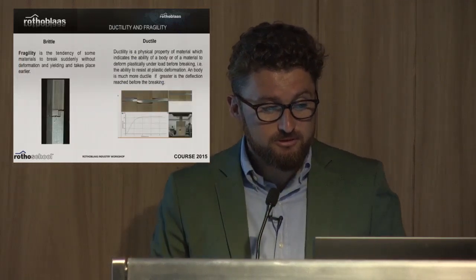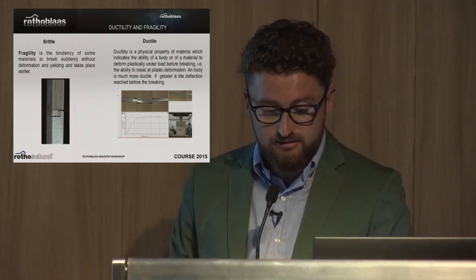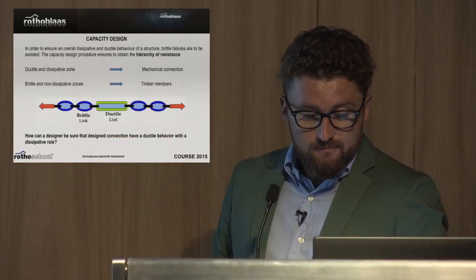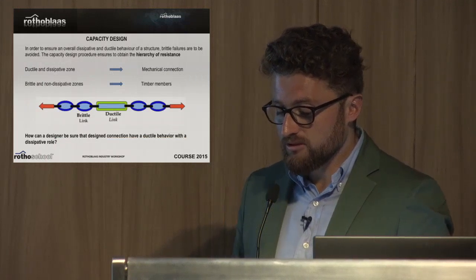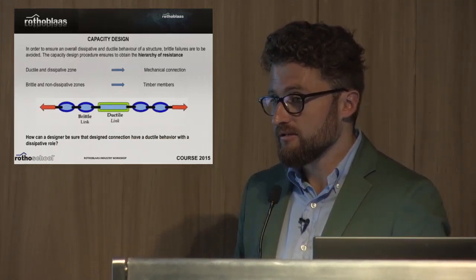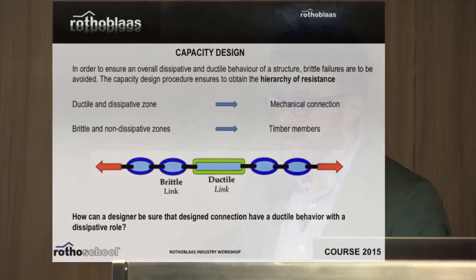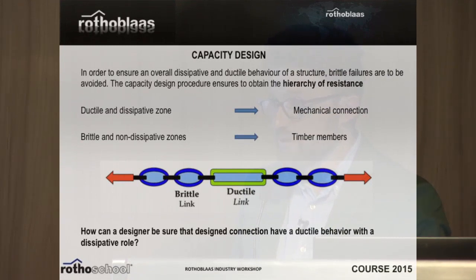Again: brittle material — the timber; and ductile material — the steel. If you think about the hierarchy of resistance, we can understand that we have to provide to our connectors all the ductile part of our building.